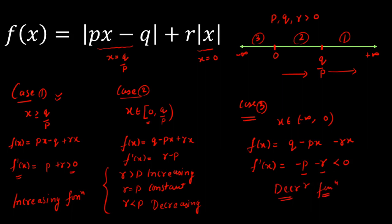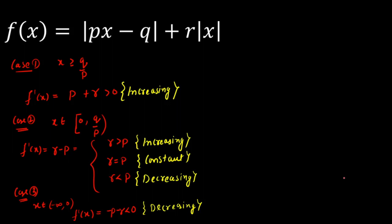Now I'll discuss all three cases graphically to determine the relationship between p, q, r for which f of x attains its minimum value at a single point. In case one, the function is always increasing. In case three, the function is always decreasing. But in case two, there are three sub-cases — increasing, constant, or decreasing — depending on the values of r and p.